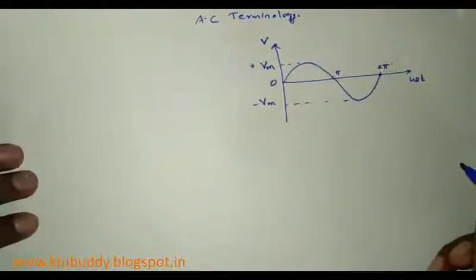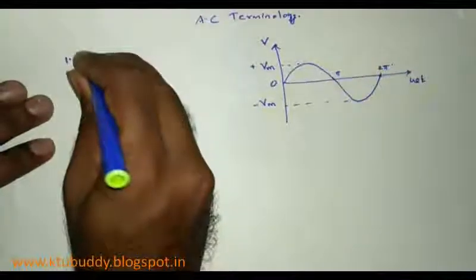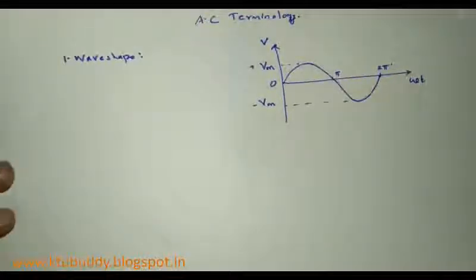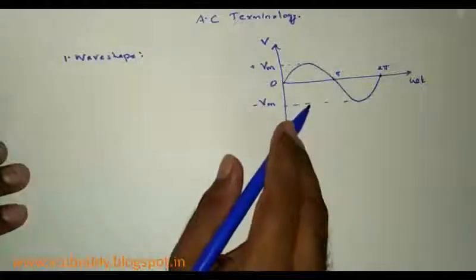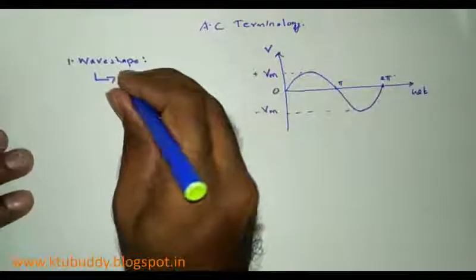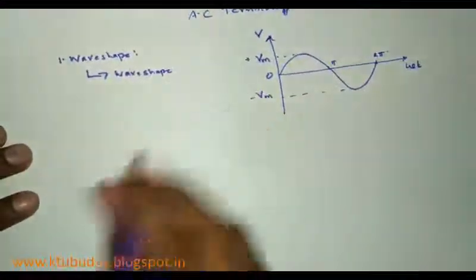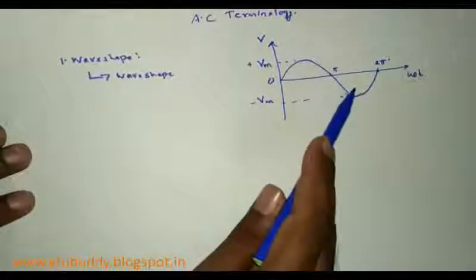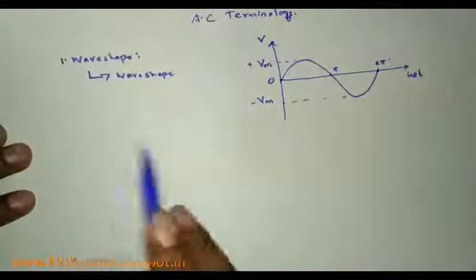It takes pi radians to complete one half cycle and two pi radians to complete one full cycle. From this waveform, the first term we discuss is wave shape. The wave shape or waveform of AC is a shape obtained by plotting the instantaneous values of voltage on the y-axis with radians or time on the x-axis. For a sinusoidal alternating current, we get a sinusoidal waveform.